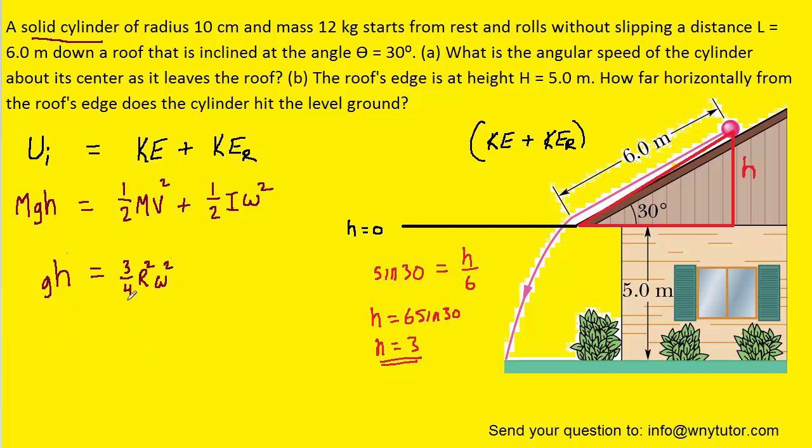Now we need to solve this equation for omega, since the question is asking us to find the angular speed. So we'll multiply both sides by 4, and then divide both sides by 3. Indeed, we can then divide by r squared, and then we'll take the square root of both sides. And then once we do that, we'll have just omega on the right side.